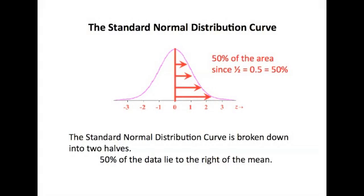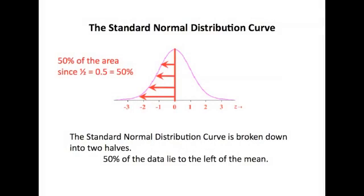In the standard normal distribution curve, 50% of the data lie above the mean. Notice that I said 50%. 50% is actually one half or 0.5. 50% of the data also lie to the left of the mean.